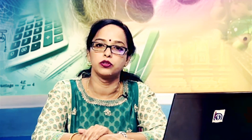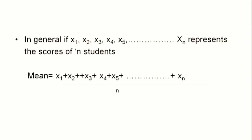Mean is calculated by finding the sum of scores, then dividing by the total number of scores. Thus, mean equals (x1 + x2 + x3 + x4 + x5 + x6 + x7 + x8 + x9 + x10) divided by 10. In general, if x1, x2, x3 ... up to xn represent the scores of n students, mean equals (x1 + x2 + x3 + ... + xn) divided by n. As an example, the Indian cricket team captain scored 75, 80, 45, 100, and 69 in a series against New Zealand. Calculate the mean score.